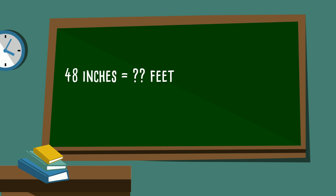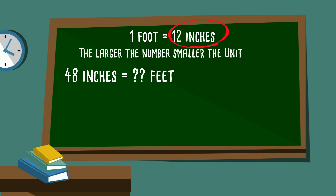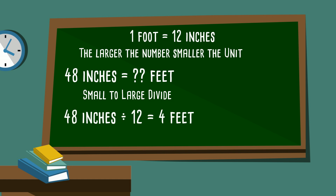Now let's go: 48 inches equals how many feet? Your hint is 1 foot equals 12 inches. Inches is smaller than feet, so we're going from small to large, so we're going to divide, and 48 divided by 12 equals 4.